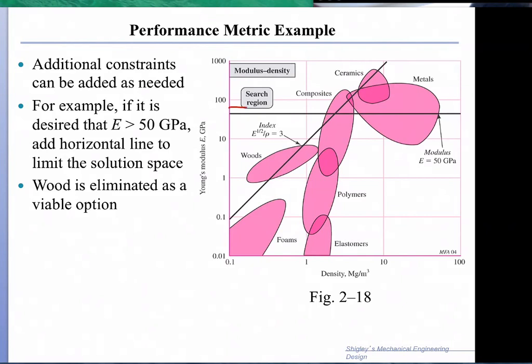For example, if we put a constraint that the strength has to be above a certain value, for example 50 GPa, the elastic modulus, that would limit the selection to this region. So it's either ceramics or composites, and then we can look within this balloon specifically for the materials, adding more constraints if necessary for the particular design.